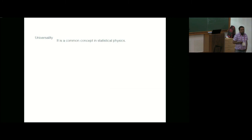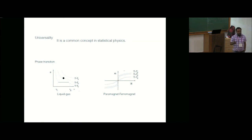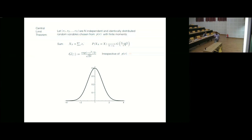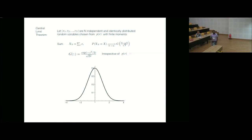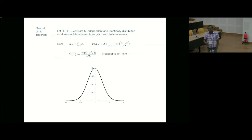Universality is a common concept in statistical physics encountered in basic courses — for example, in liquid-gas or paramagnetic phase transitions. A simpler and widely known example is the central limit theorem: consider independent and identically distributed random variables from a parent distribution Px with finite moments. The sum, shifted by its mean and scaled by its fluctuation, converges in the large-n limit to a universal Gaussian distribution, irrespective of the parent distribution.